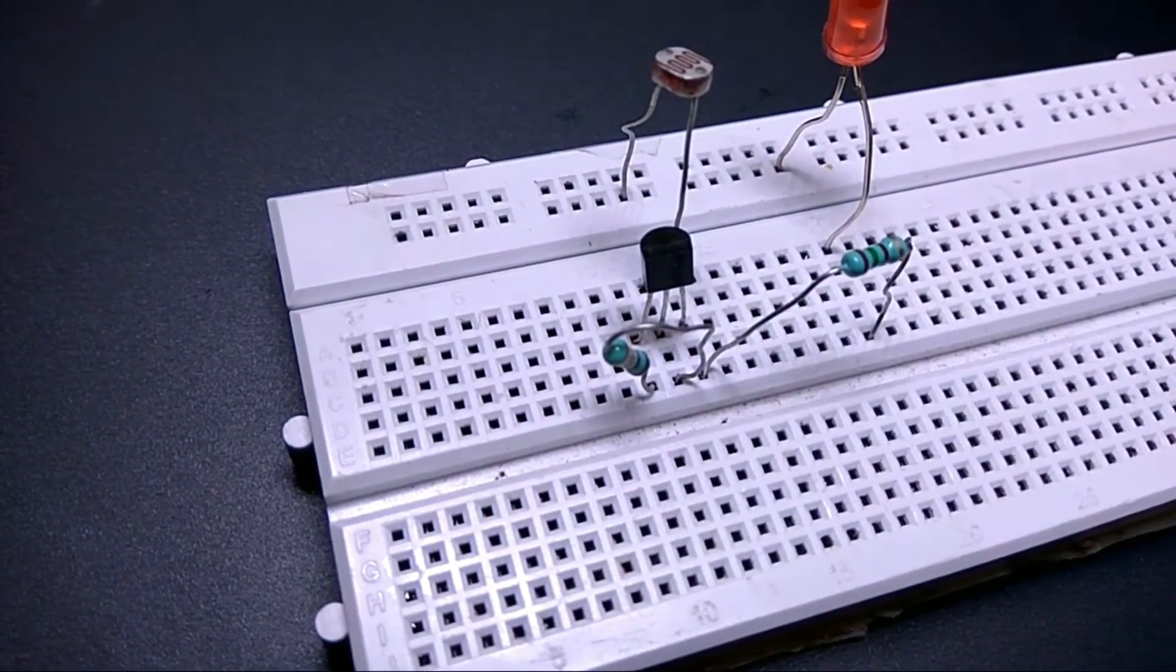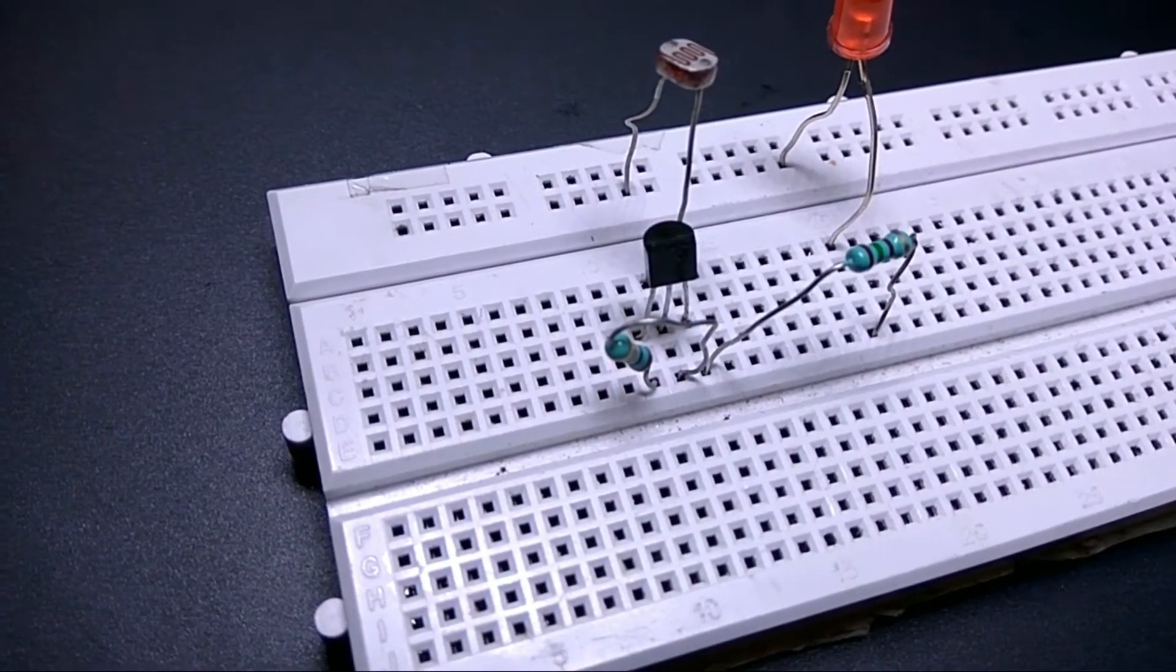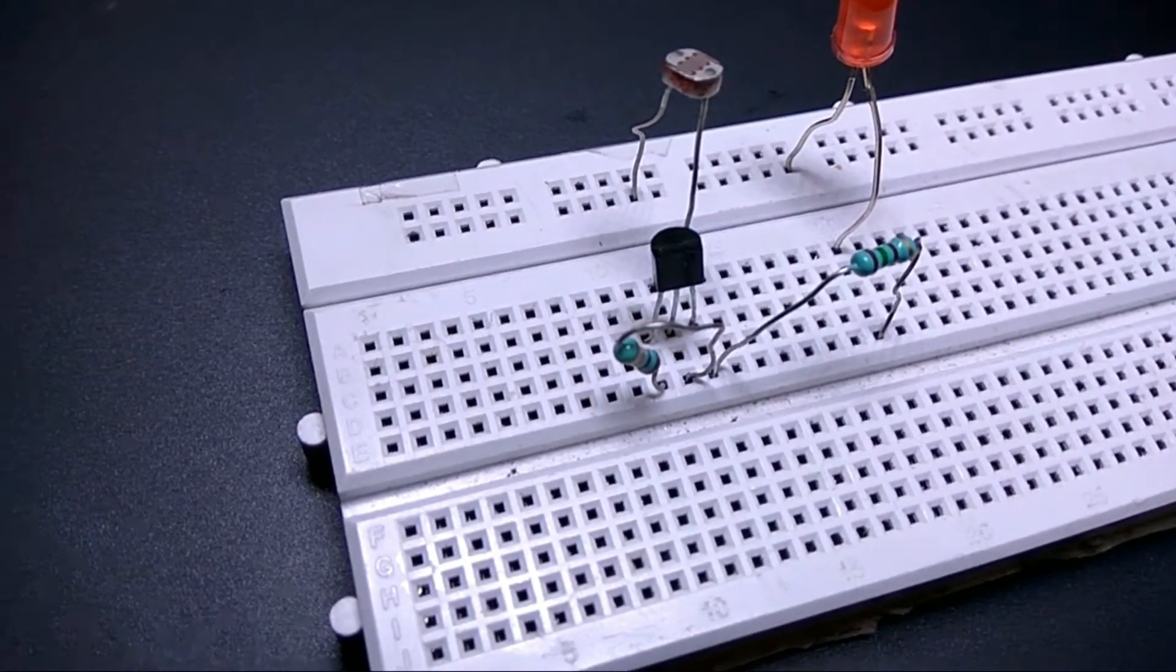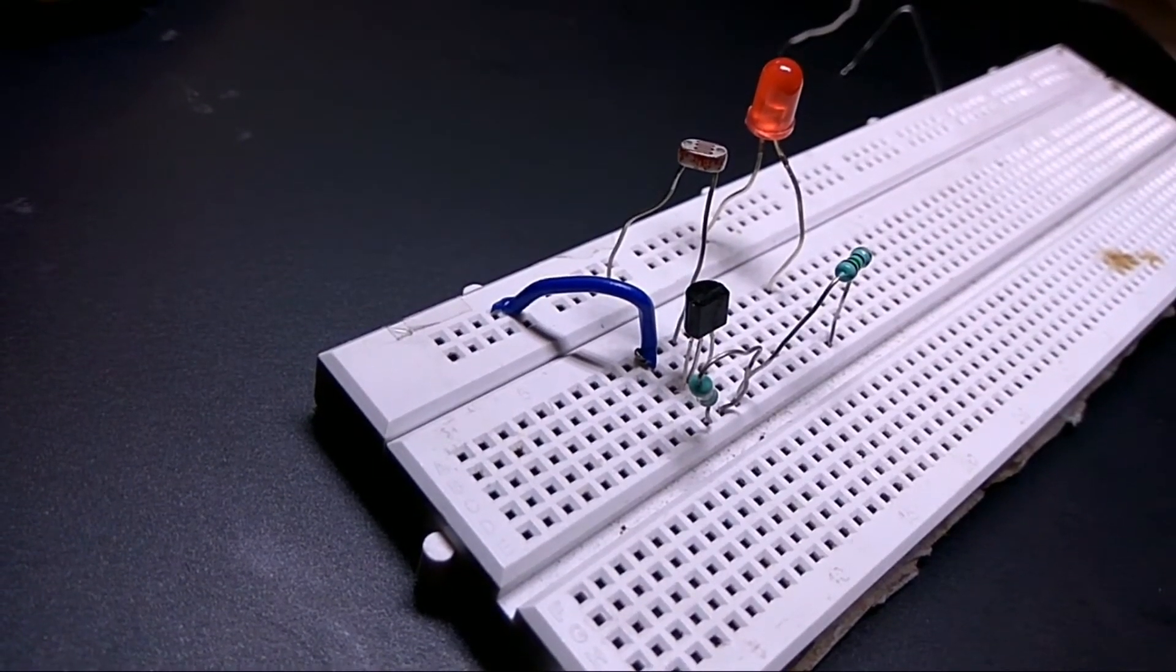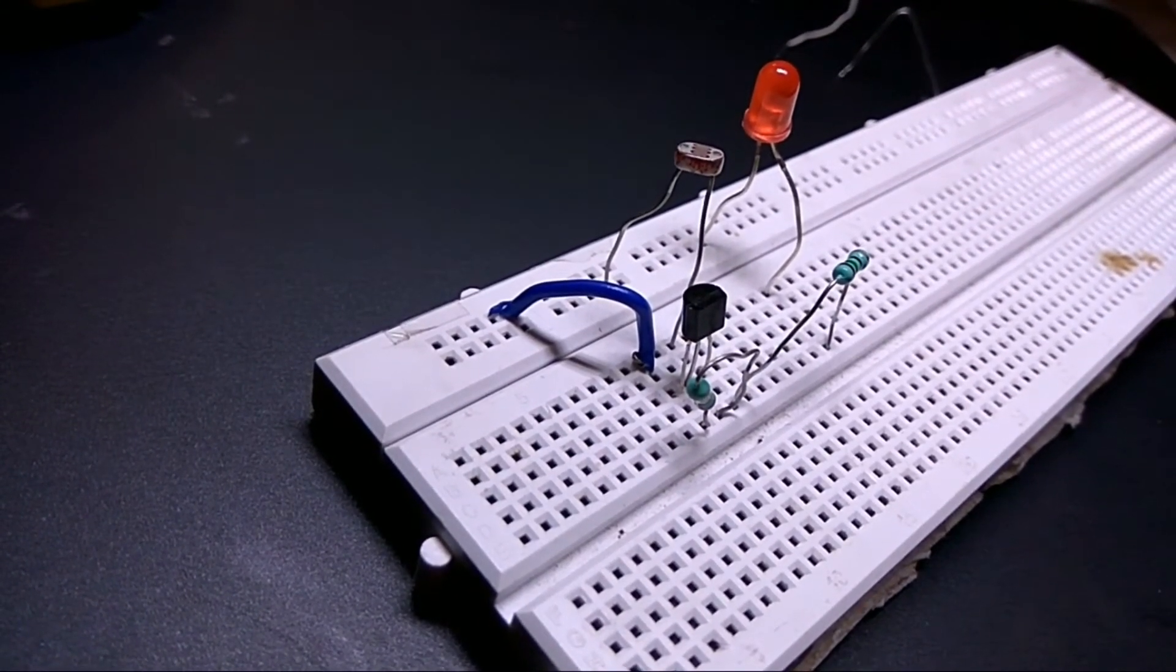Connect the collector of the transistor to positive power supply. I am using the top rail as the positive and the bottom rail as the negative.